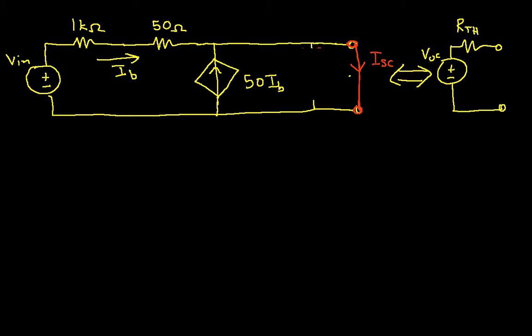So what we can see then, if we apply Kirchhoff's current law to this point here, is that the short circuit current is going to be equal to IB plus 50*IB. And we can write this as 51*IB.